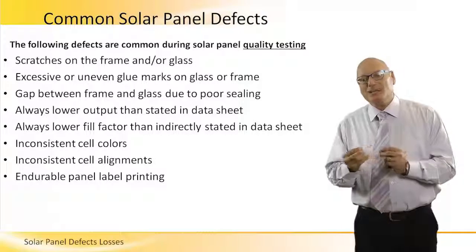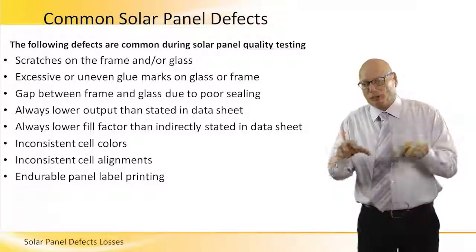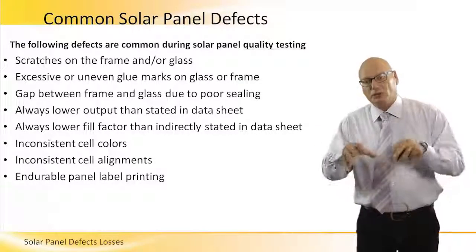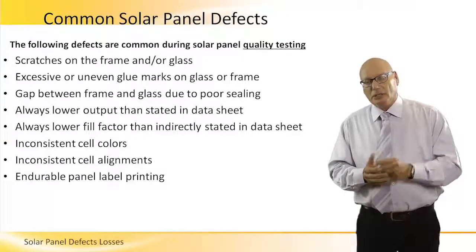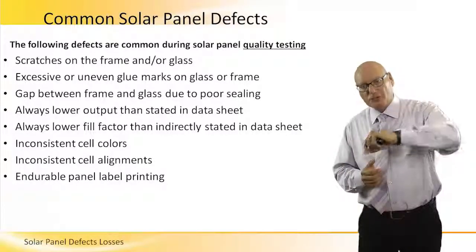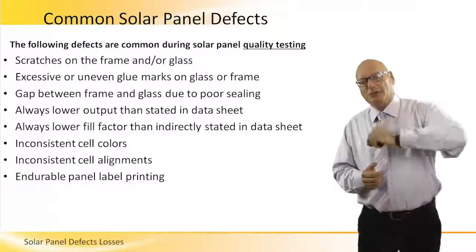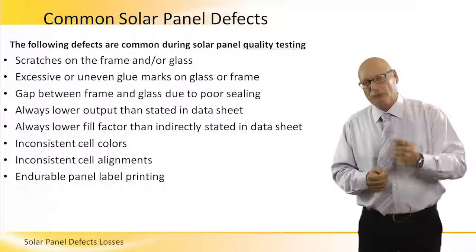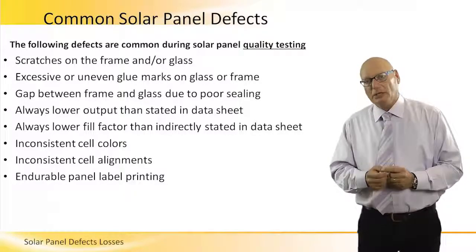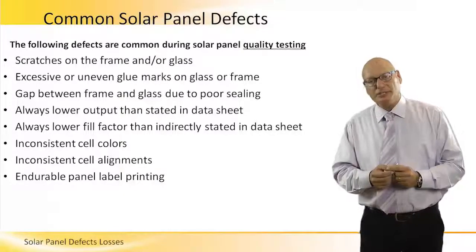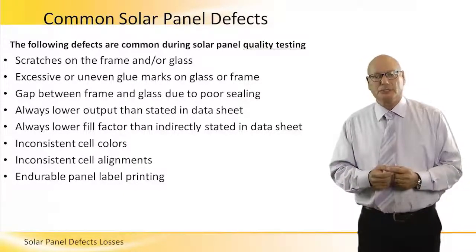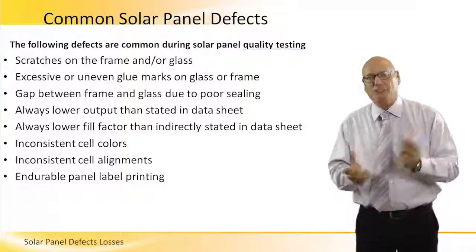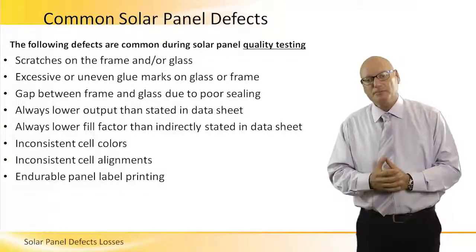Inconsistent cell alignment is another issue. A module consists of different cells all connected together. Making sure that the total length of the conductors is minimized reduces resistance and increases efficiency. If the cells are not aligned consistently, that will create a loss.